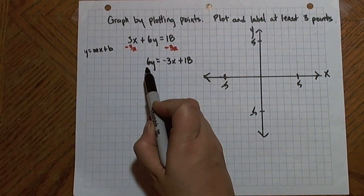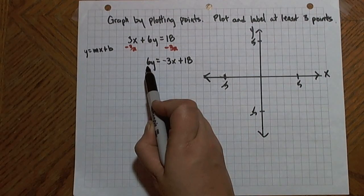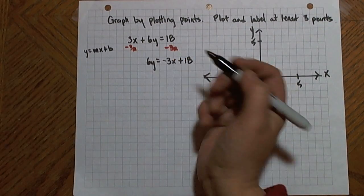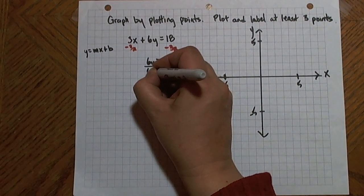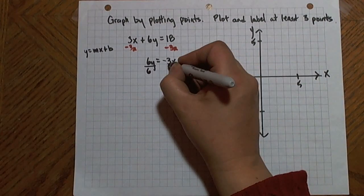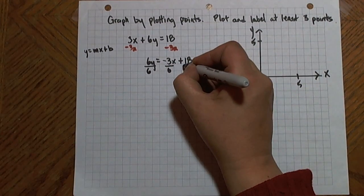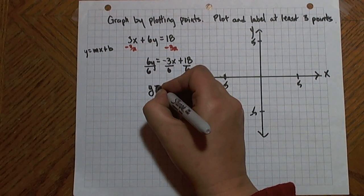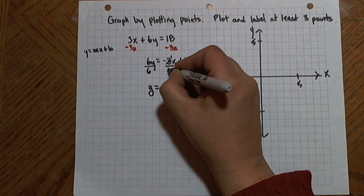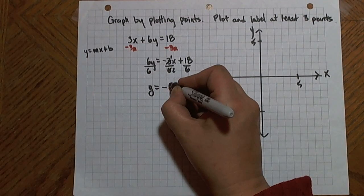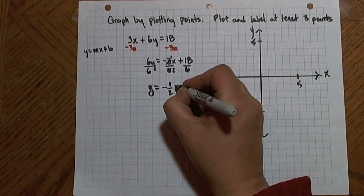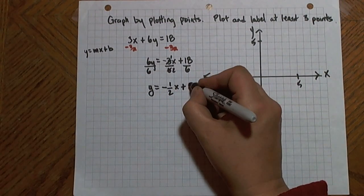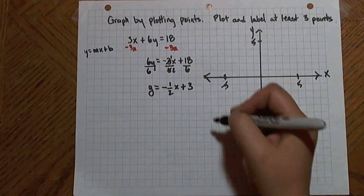I still need to get the y isolated. Right now it has a coefficient of 6, so to eliminate that coefficient I will divide it by 6, and I'll have to do the same to the other side, to each term on the other side of the equation. And then canceling common factors, I'll have y equals negative 1 half x plus 18 divided by 6 is 3.